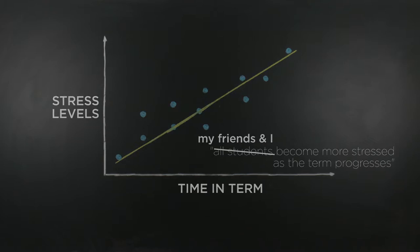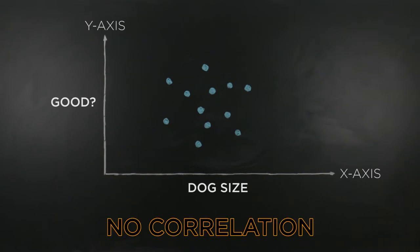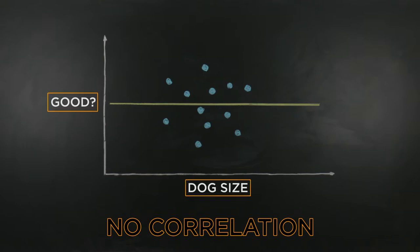There are a few more graph shapes that you should be aware of. A graph like this shows no correlation. As you can see, there is no clear positive or negative regression line. In the case of this graph, we can see that there is no correlation between dog size and whether they're a good dog. We can't use dog size to predict dog goodness.